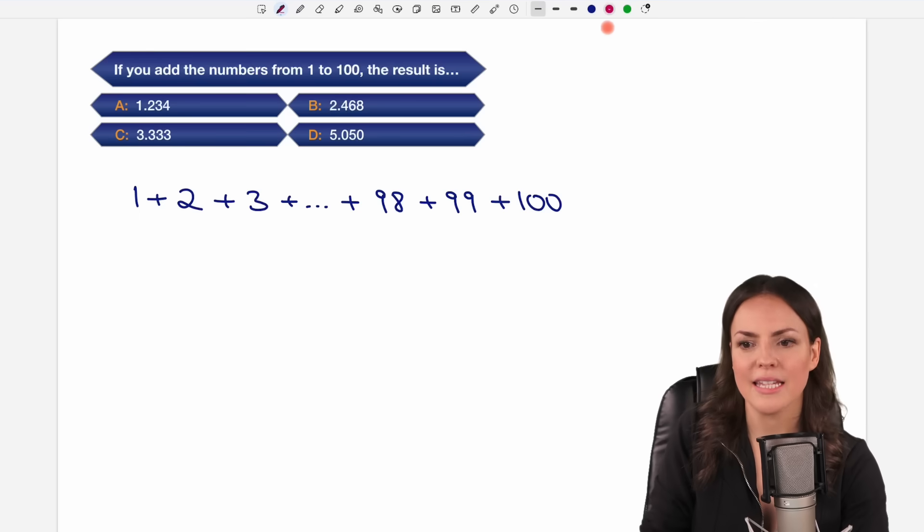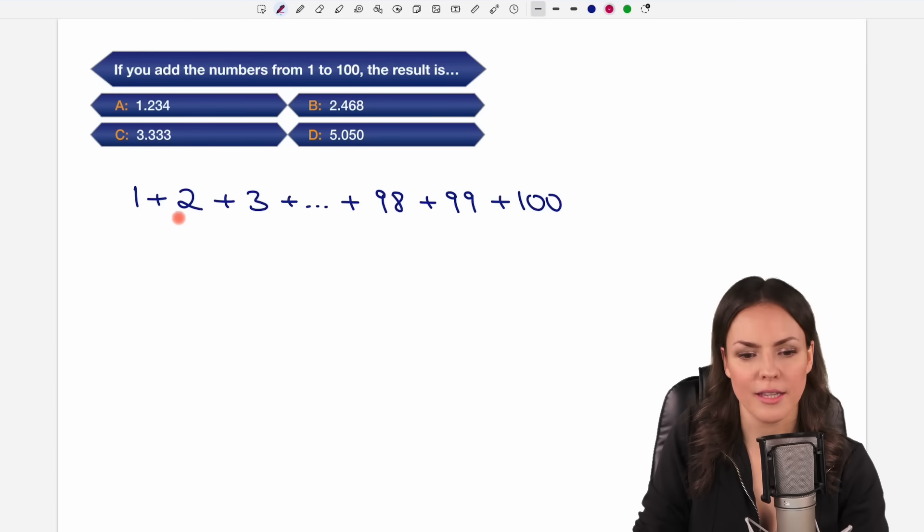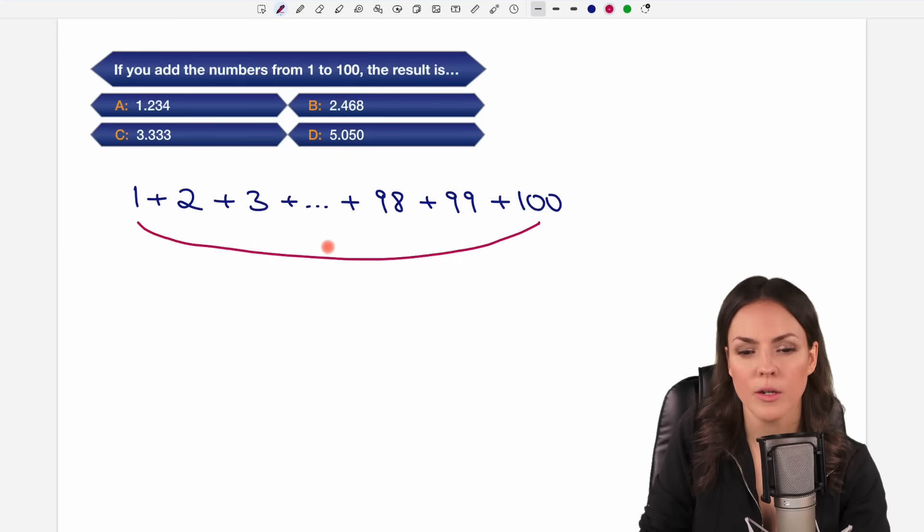And he did the following. Instead of adding the numbers here at the beginning he just added the smallest number and the largest number. So 1 plus 100 which equals 101. And then he added the second smallest number and the second largest number. So 2 plus 99 which equals 101.